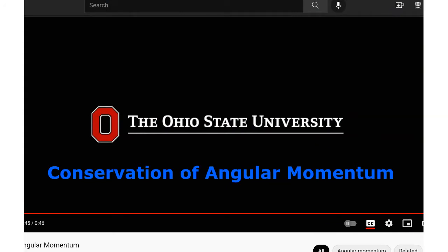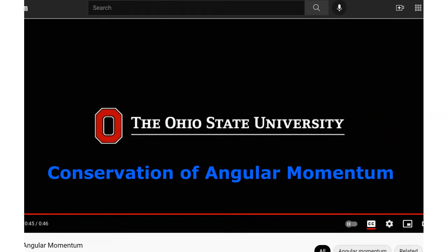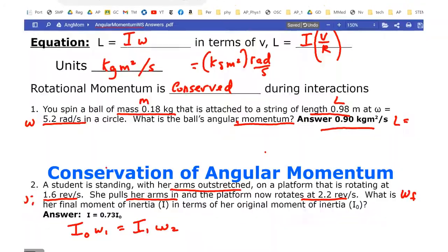Something spinning has angular momentum, spinning momentum. Let's take a look at our sheet here.